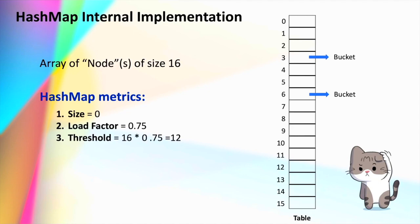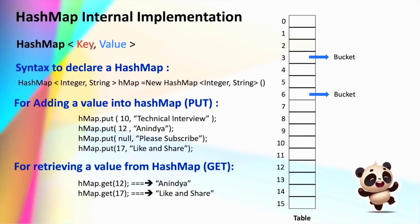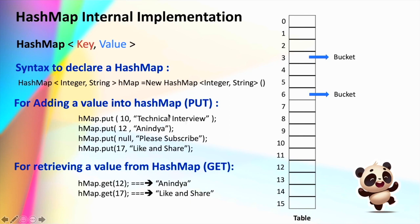Now let's see some basic syntax of the HashMap. A HashMap is a key-value pair where each entry is defined with a key and a value, and the general syntax for declaring a HashMap is: in this example we are storing a key-value pair where the key is an Integer and the value is a String. To insert a value we use the predefined put function, passing the corresponding key-value pair — here we pass 10 as our key and 'technical interview' as the value.